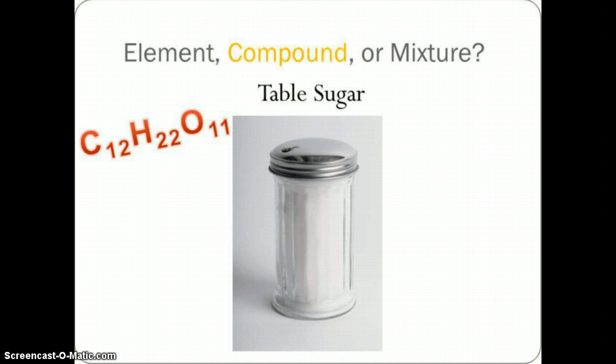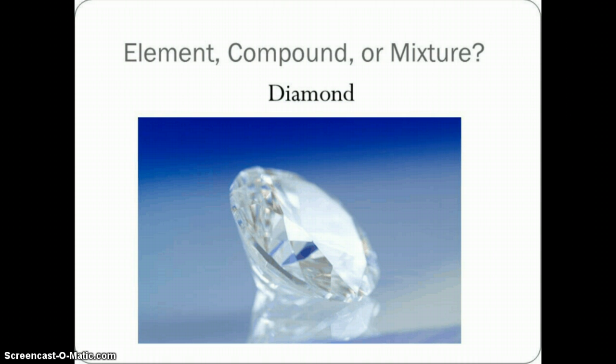Next one: a diamond. Is it an element, a compound, or a mixture? An element. Diamonds are actually made of carbon — most of you know that — formed under extremely high pressure. It's an element.